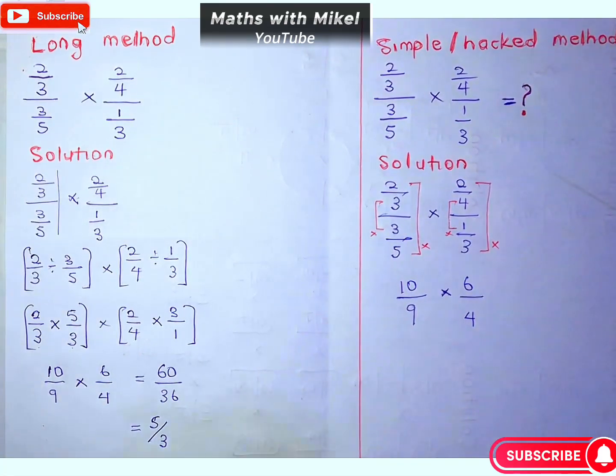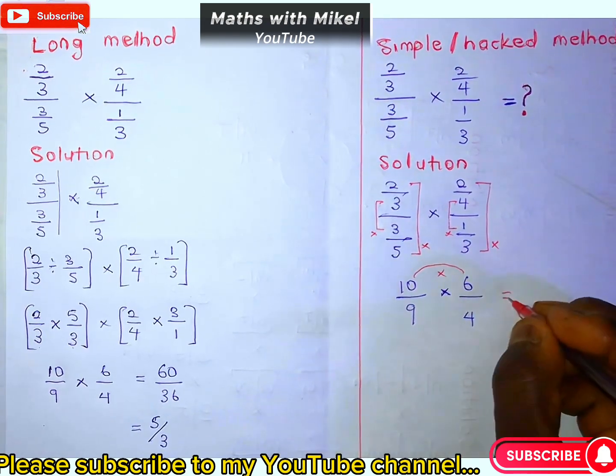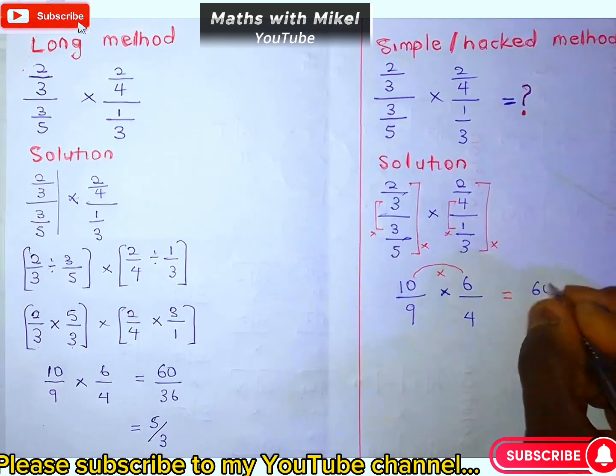Since this is multiplication, you can easily calculate: 10 over 9 times 6 over 4 equals 60 over 36, which simplifies to 5 over 3.